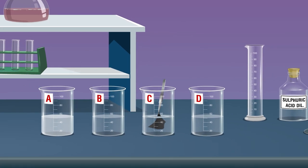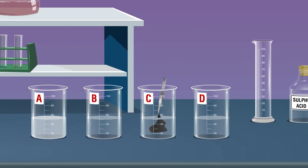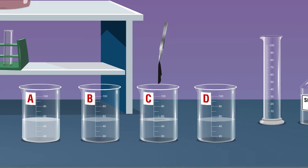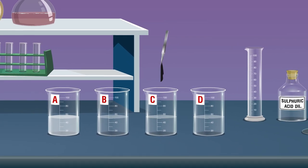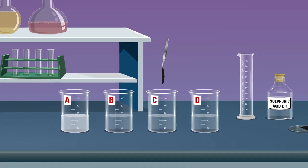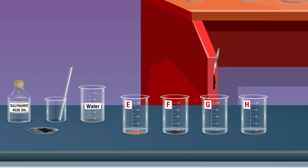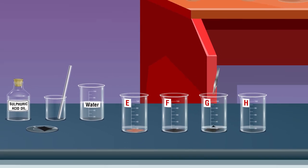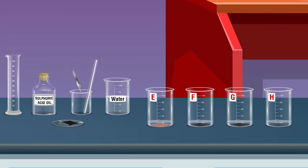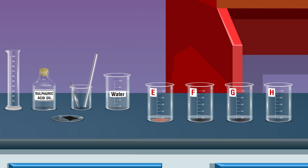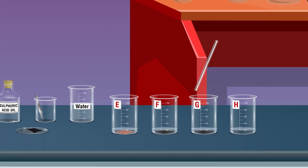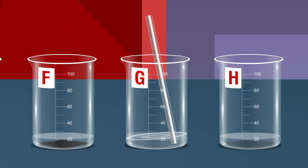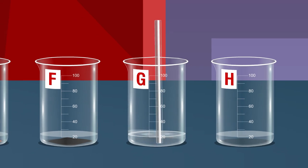Dip a small piece of black cloth in beaker C. Take out the cloth from beaker C using tweezers, pick the cloth from the beaker and dip it in dilute sulfuric acid in beaker G, and stir it gently with the help of a glass rod.